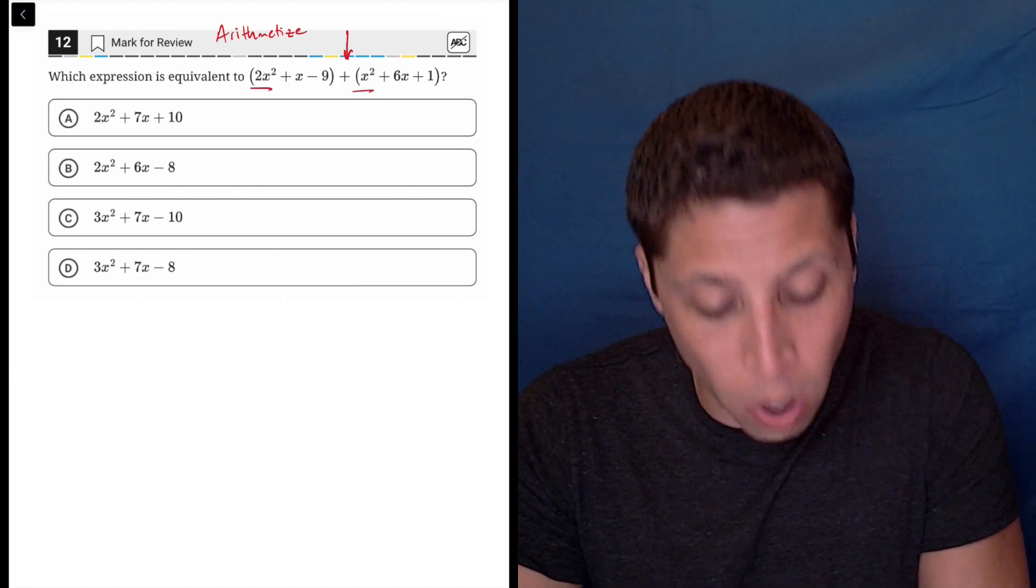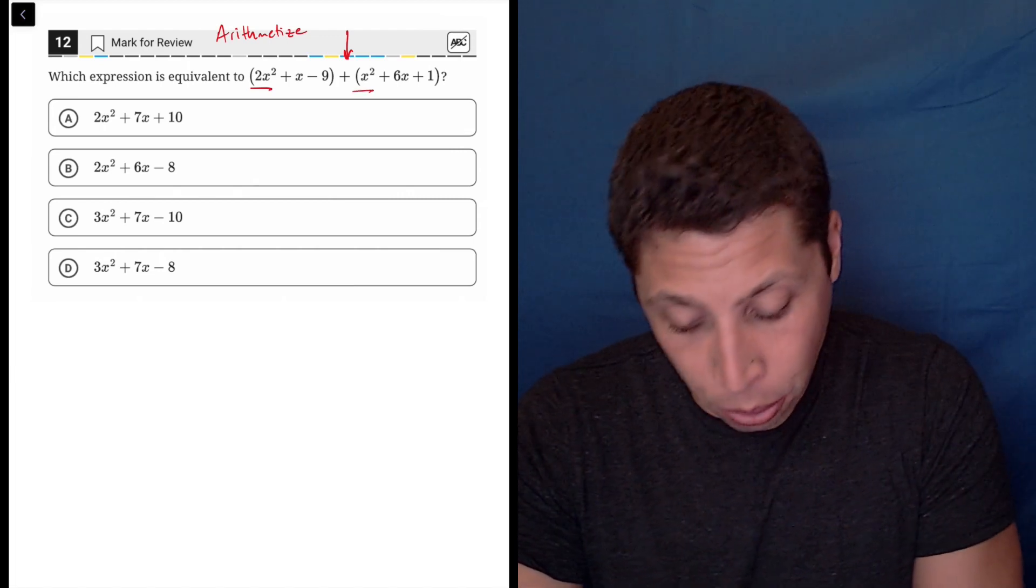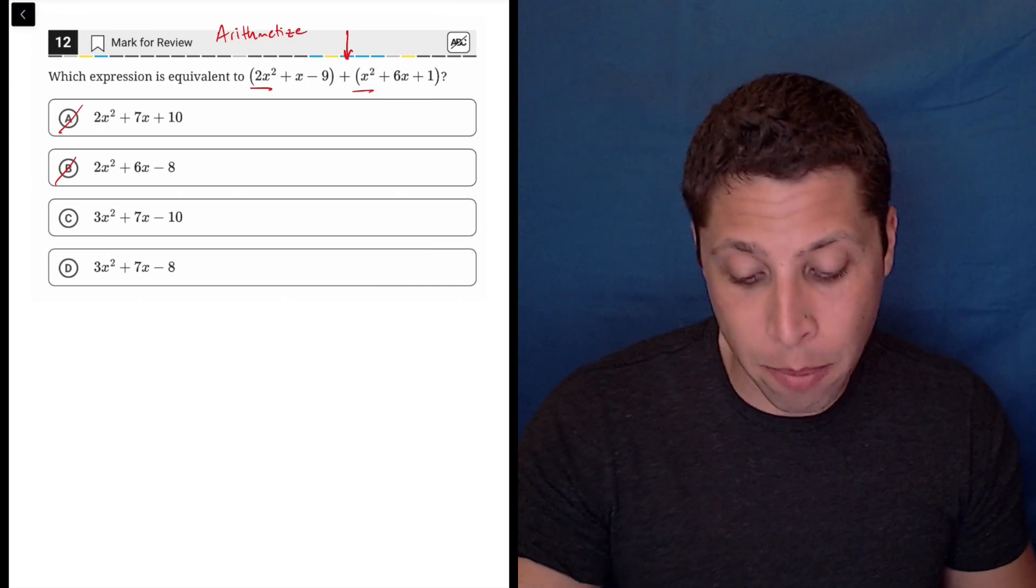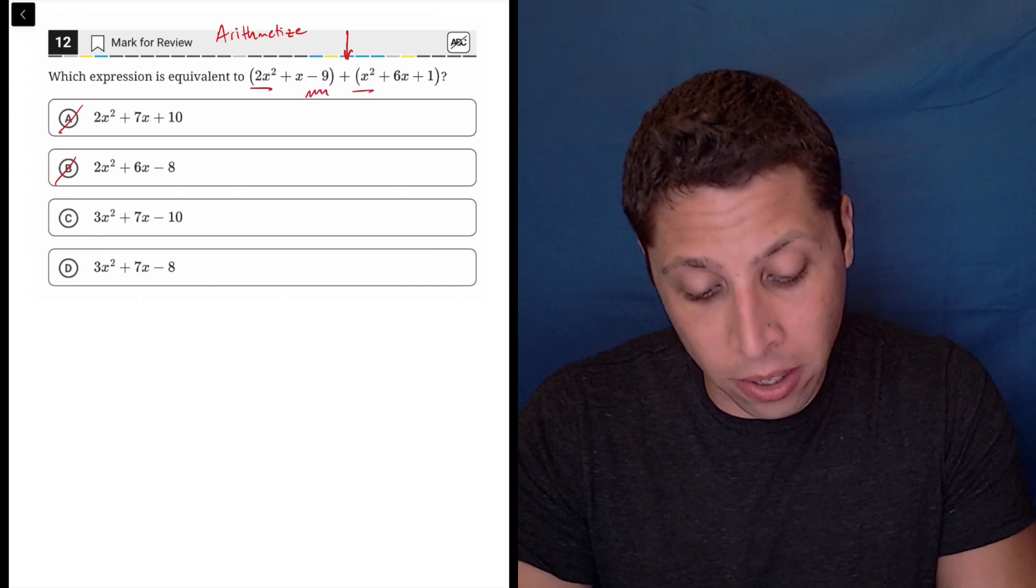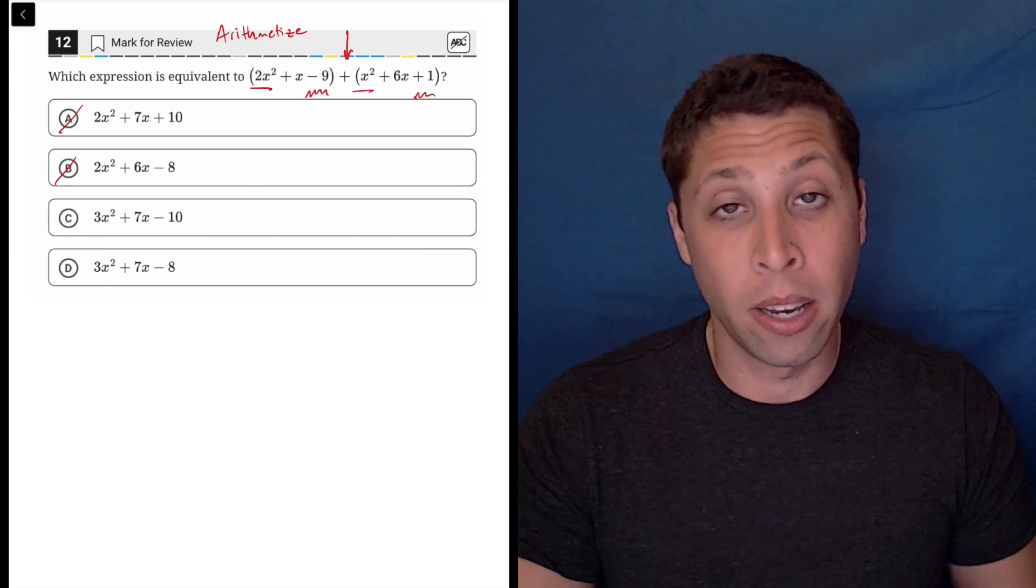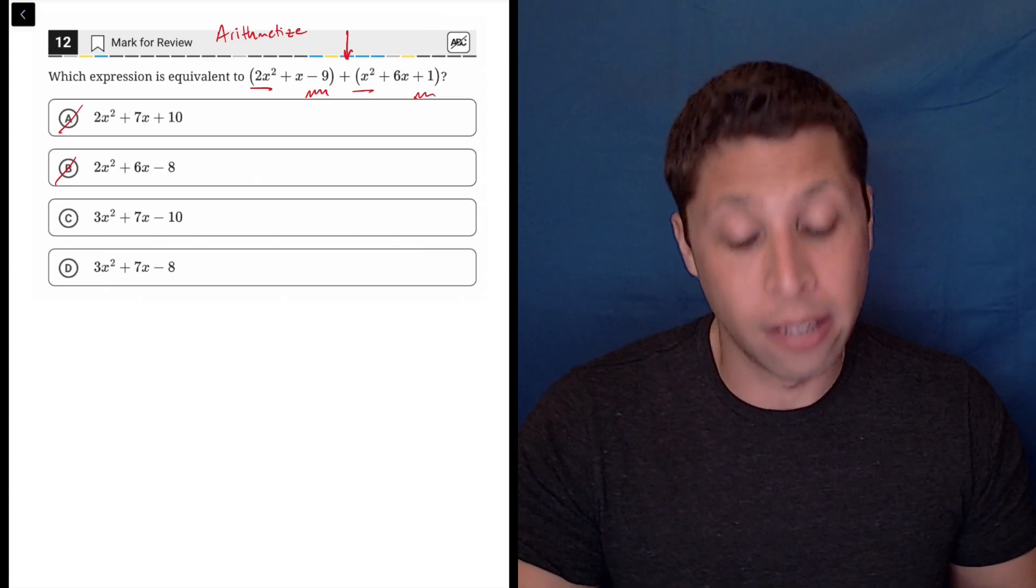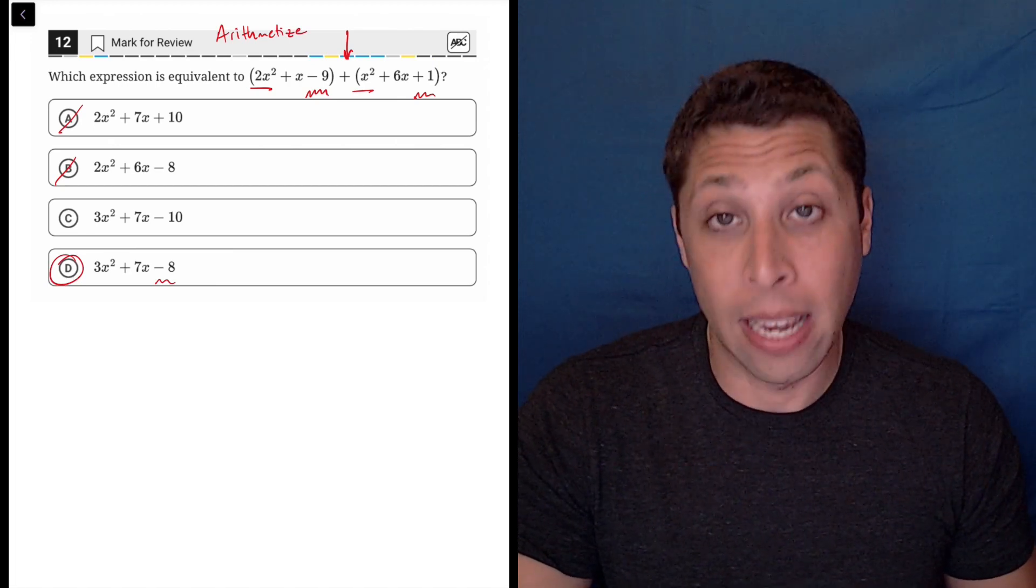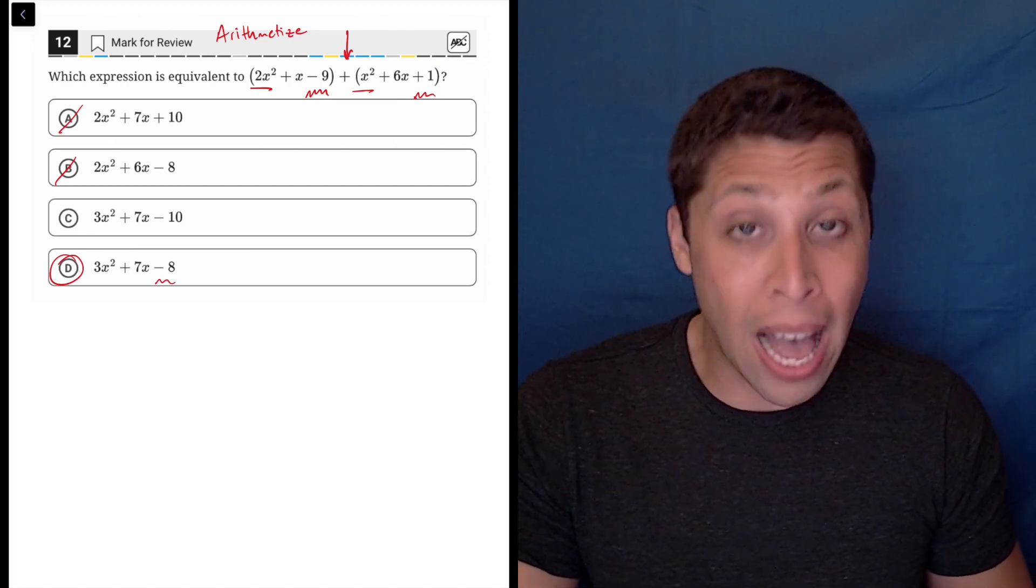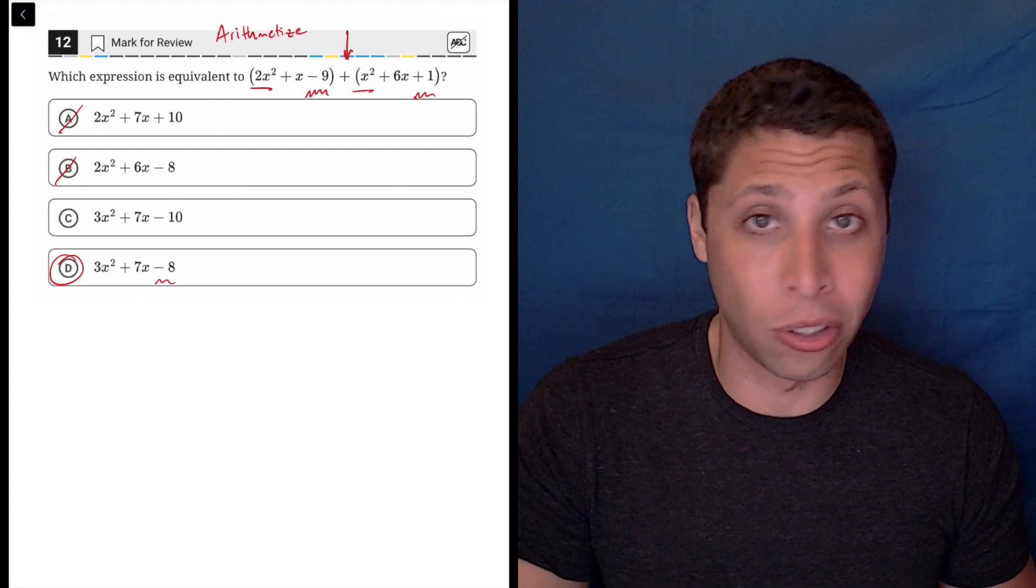So 2x squared and 1x squared is 3x squared, so that gets rid of a and b. Then the 7x isn't going to matter, so I'm going to skip right over to the negative 9 plus 1. Negative 9 plus 1 is negative 8, so that gets us choice d, and that's it. That's the whole thing. So that is definitely easiest if you just understand the algebra.